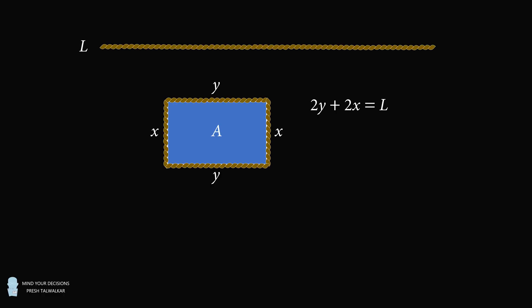We will solve this equation for Y. Subtract 2X from both sides, and then divide by 2 to get Y is equal to 0.5L minus X.